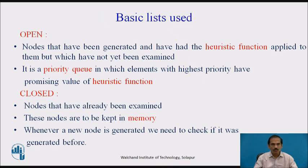We use two basic lists to generate our search properly. One is 'open', where nodes which have been generated and have had the heuristic function applied to them but have not yet been examined — it is the priority queue in which elements with the highest priority and most promising values of the heuristic function are being developed. 'Closed' is a list of nodes that have already been examined and are kept in memory. Whenever a new node is generated, we need to check if it was generated before.